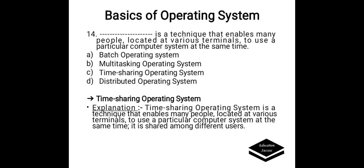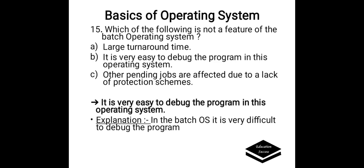___ is a technique that enables many people, located at various terminals, to use a particular computer system at the same time. Which of the following is not a feature of the batch operating system? Option A. Large turnaround time, B. It is very easy to debug the program in this operating system, C. Other pending jobs are affected due to a lack of protection schemes. Correct answer is B. In the batch operating system, it is very difficult to debug the program. Hence, option B is not a feature of the batch operating system.